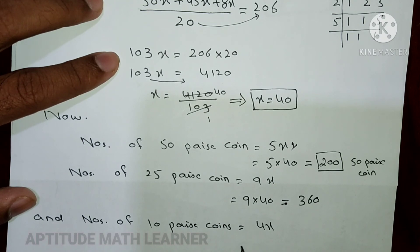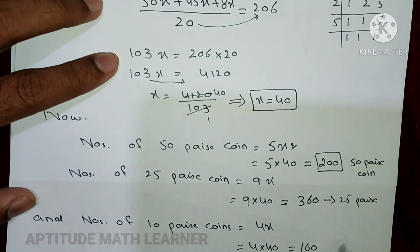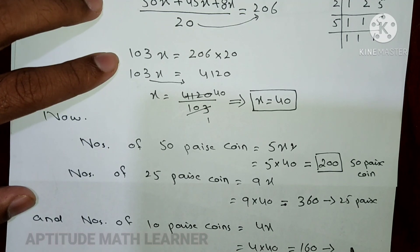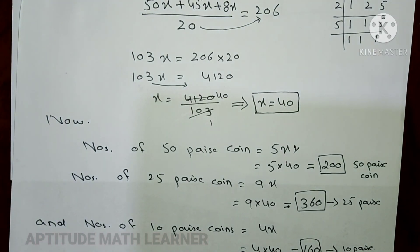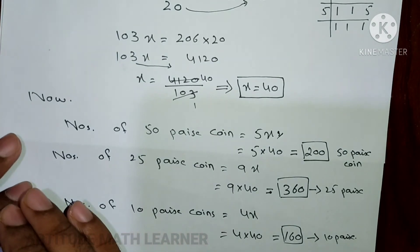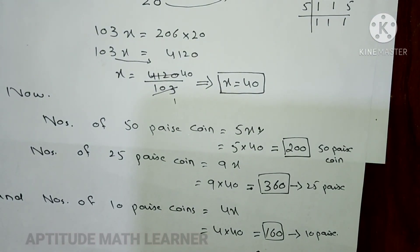Number of 10 paisa coins = 4x = 4 × 40 = 160. So the answers are: 50 paisa coins = 200, 25 paisa coins = 360, 10 paisa coins = 160. Please subscribe to our channel and share for more informative videos. Thank you.